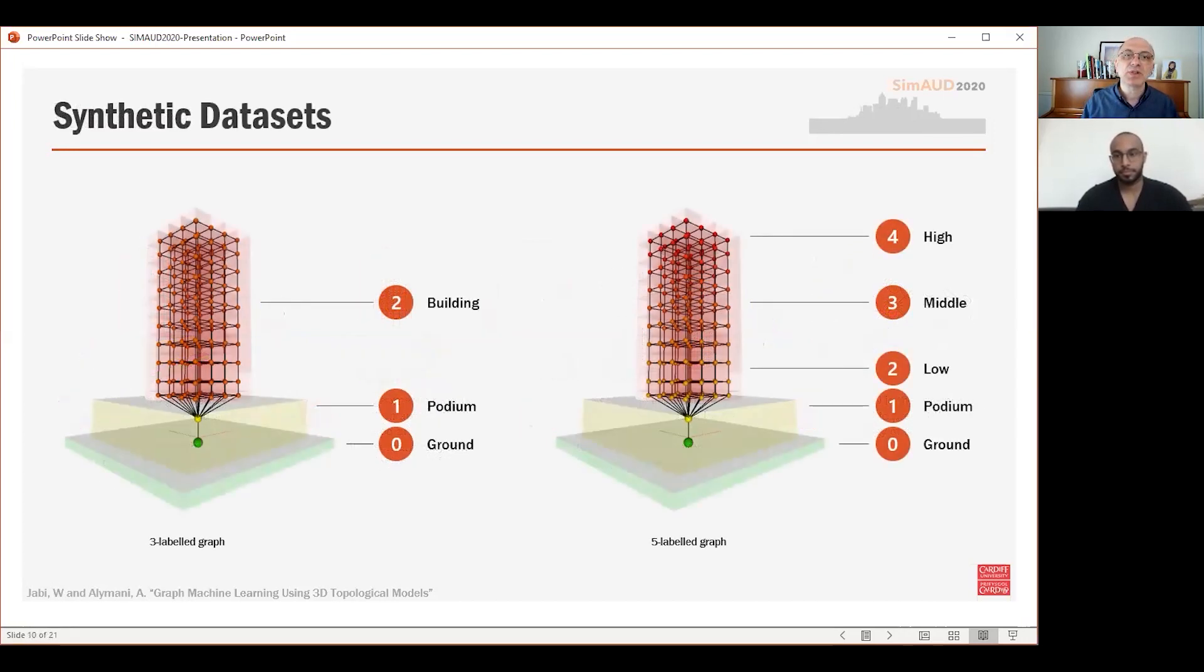So we experimented with generating two 1000-case datasets. The first dataset, we call 3-label, classifies the nodes into ground, podium, and building. The second dataset, we call 5-label, classifies the nodes into the same ground and podium but then divides the building nodes into three categories based on their z-elevation: low, medium, and high. This yields five total node categories.